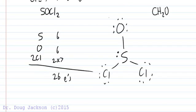So if we do formal charge, we have a negative one here on oxygen, a positive one on the sulfur, and we are done with our Lewis structure.